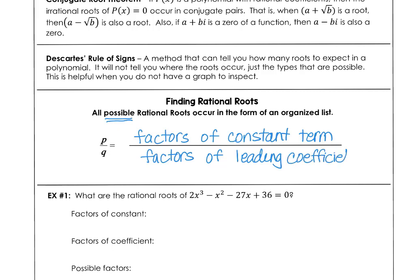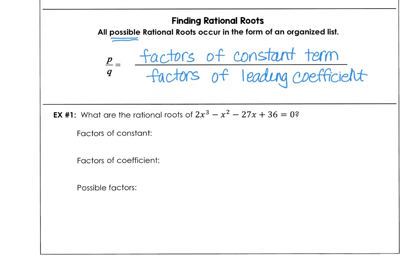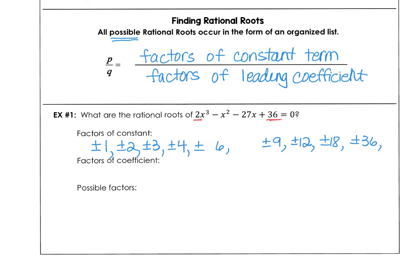In example one, the constant term is 36 and the leading coefficient is 2. The factors of 36 are: 1×36, 2×18, 3×12, 4×9, and 6×6. The factors of the coefficient 2 are just 1 and 2.